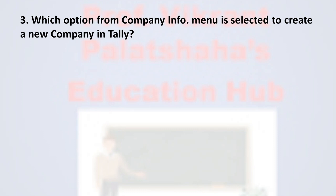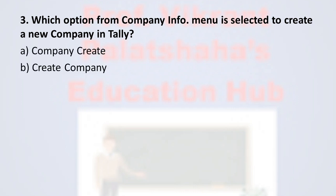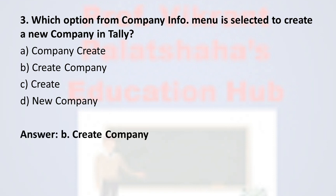Question number three: Which option from the Company Info menu is selected to create a new company in Tally? Option A: Company Create, Option B: Create Company, Option C: Create, Option D: New Company. The correct option is Option B, Create Company. In the Company Info menu, if the user wants to create a new company, they choose the option called Create Company, therefore the correct answer is Option B.